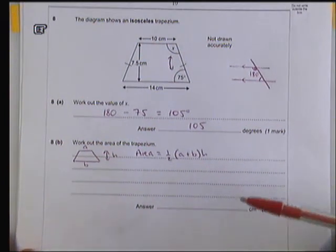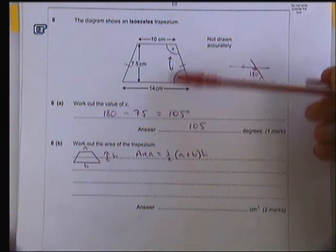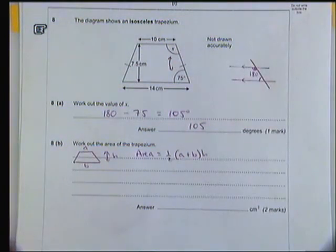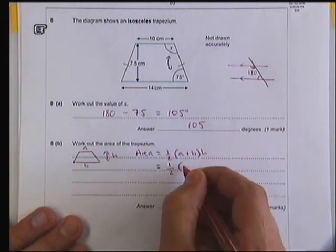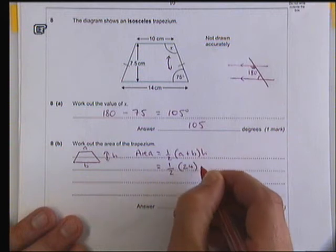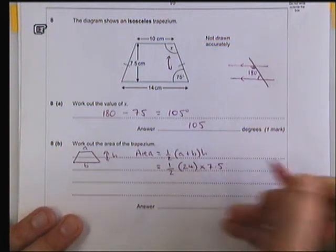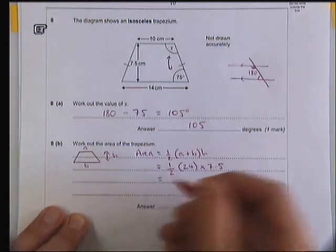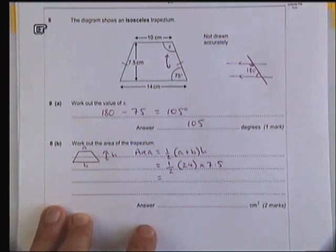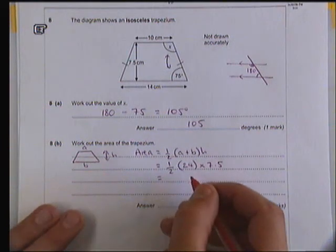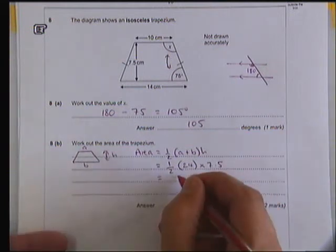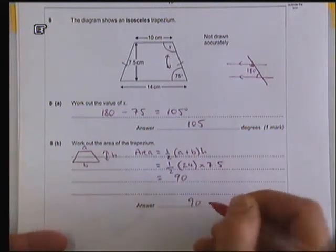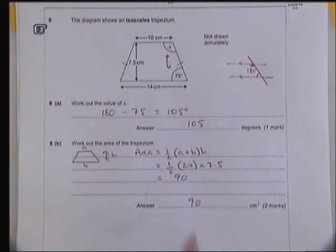So here we have 10 and 14 as our values of a and b. Half of (10 plus 14), which is 24, times the height, which in this case is 7.5. Remember you can use a calculator here, so you could do 0.5 times 24 times 7.5, which in fact makes 90. So there are a number of ways you could work that sum out, but the easiest one is simply typing that into a calculator.